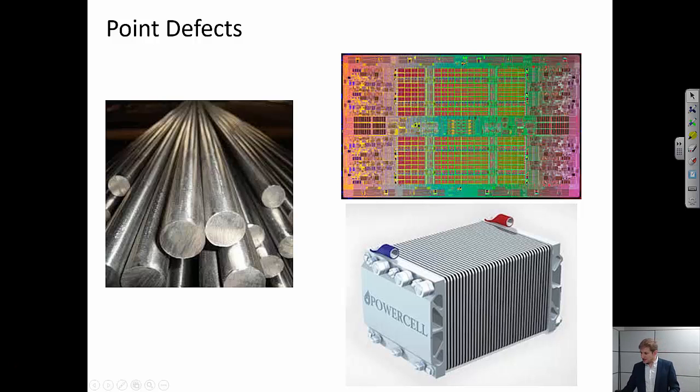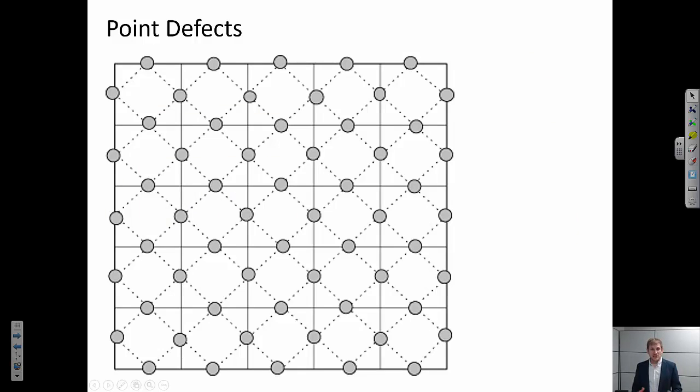So what are some of the different kinds of point defects that we might see? We're going to first consider the metallic systems and there are three basic kinds of defects that we're going to talk about. The first is called a vacancy. So if this is our lattice here, if one of these atoms was missing, it's not there, that is what we call a vacancy.